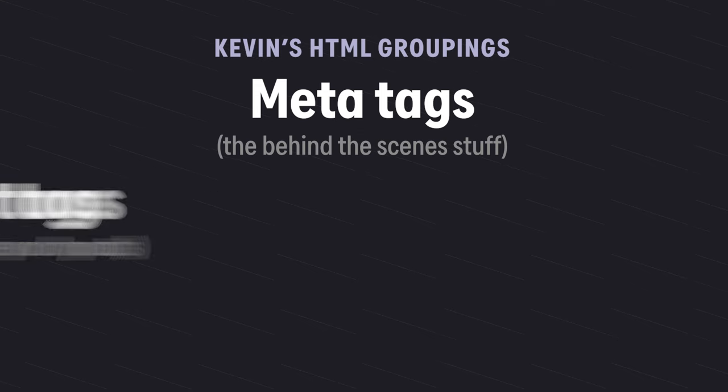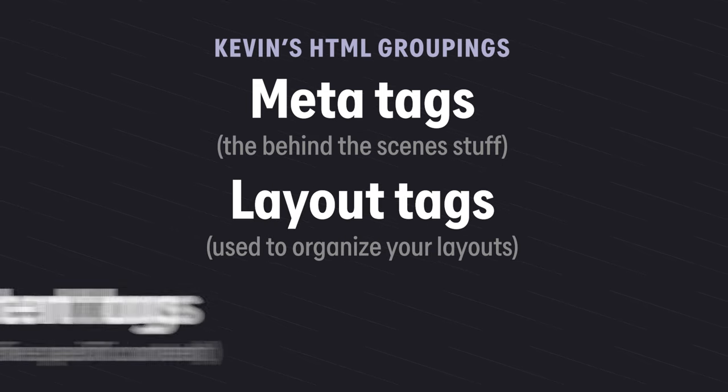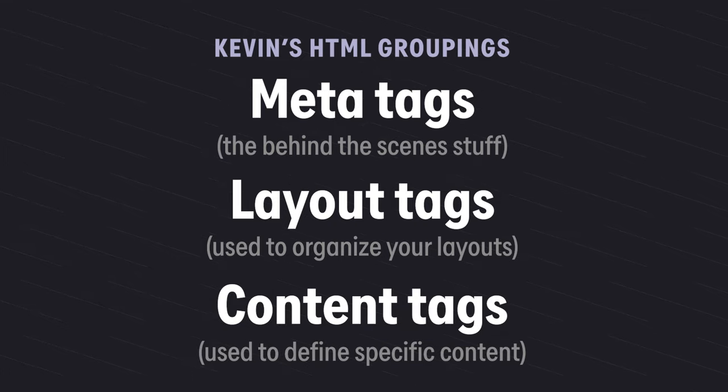To help simplify things, I also like to group these off, and we have less than 10 in every single one of the groups. So we have a meta group of tags, a layout group of tags, and what I like to call the content-related tags. I like grouping them because by giving them a more specific purpose it makes life a little bit easier — like, oh, I'm putting in content or I'm making a layout, so I should be looking for one of these.